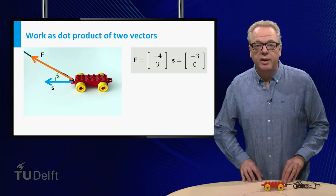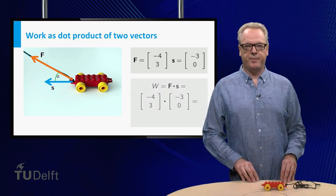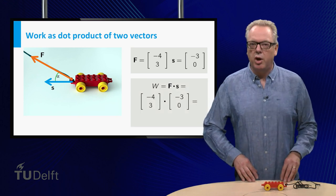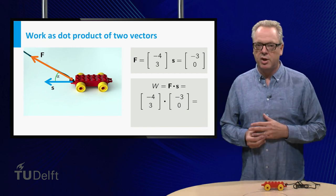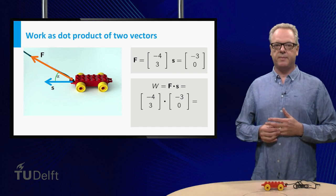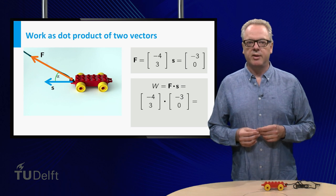The work done is the dot product of the vectors F and S. With our new formula, you can simply calculate this dot product as the sum of the products of the corresponding components. In this example, the answer is 12.